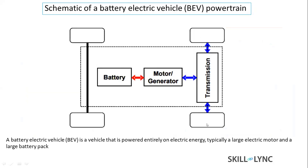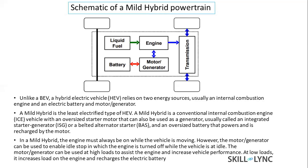There are many hybrid powertrain configurations that combine conventional and electric engines. One type is the mild hybrid powertrain. In city driving conditions, a significant amount of energy is lost during engine idling. In a mild hybrid, a motor-generator helps the engine deliver power during that period, powered by a battery pack. This is how the mild hybrid powertrain works.